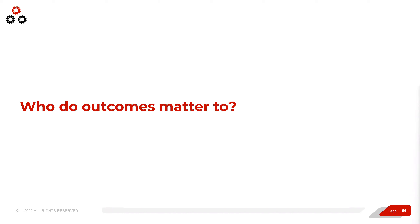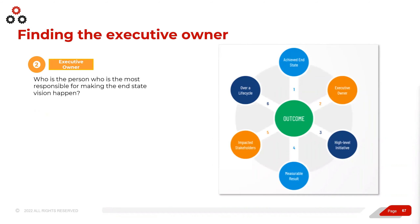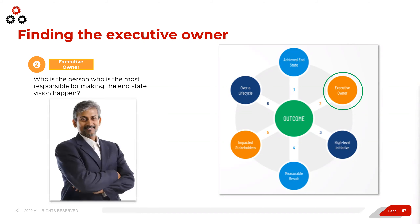All you can do is enable. So let's figure out who the executive owner is of that end state vision. There's probably an executive with patterns, points of view, and perspective around tackling that achieved end state. Who is the person most responsible for making that end state vision happen? When it comes to enablement, who has the achieved end state of what sales success looks like? How are you aligning your outcomes to that person? Is it the marketing leader, the sales leader, sales leadership, or the CEO? Who's the executive owner of the outcomes you're driving?